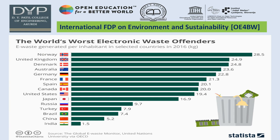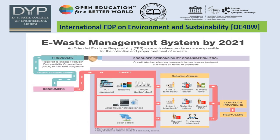The worst electronics waste offender produces 28.5 kg, Norway is among the highest and India is mostly 1.5. For 21st century e-waste management, Extended Producer Responsibility (EPR) means operators and producers are responsible for the collection and proper treatment of e-waste. E-waste is categorized with ICT equipment, batteries, lamps, large household appliances, freezers, refrigerators, and solar panels. Collection techniques include take-back, collect-to-device, and converting e-waste to logistics providers and recyclers.